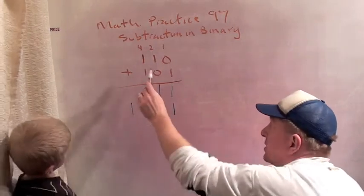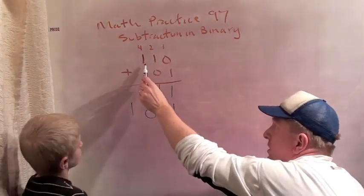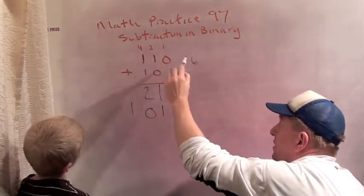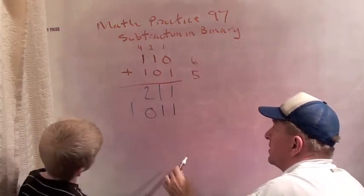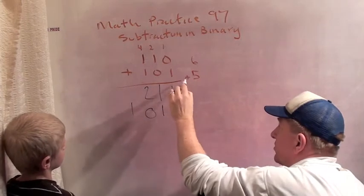Now let's see if that makes sense. This is four plus two, which is six. This is four plus one, which is five.